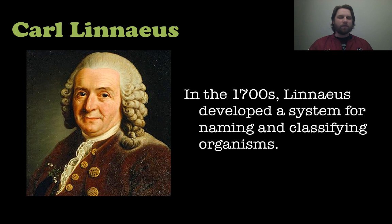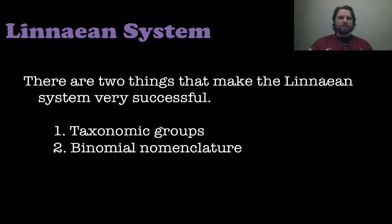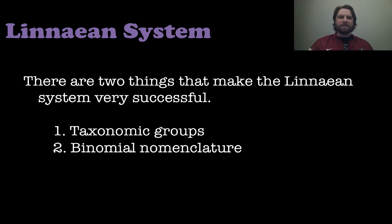There was a need for it because people really didn't speak the same language necessarily in scientific terms. So the Linnaean system had two things that made it really successful: number one, taxonomic groups, and number two, the whole system of binomial nomenclature. We're going to look at both of these in this lesson.